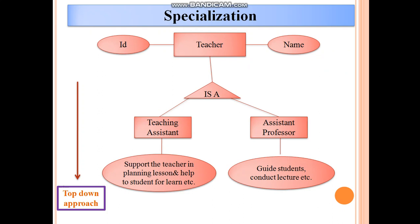Next is specialization. Specialization is exactly opposite to generalization — it is a top-down approach. Here you can see there are a number of designations of teacher, like teaching assistant, assistant professor, associate professor, and professor. ID and name are the common attributes. Teacher is a teaching assistant, and teacher is an assistant professor.